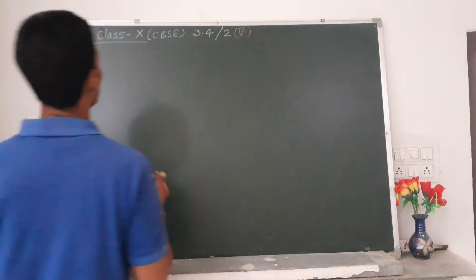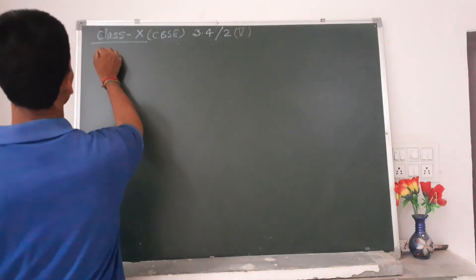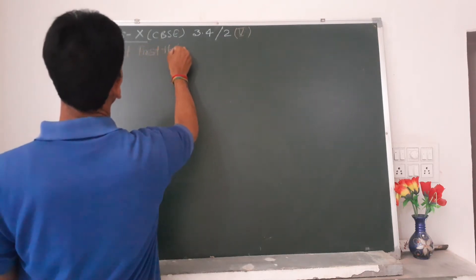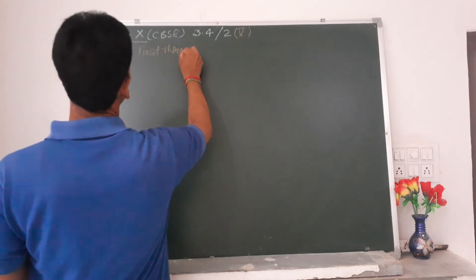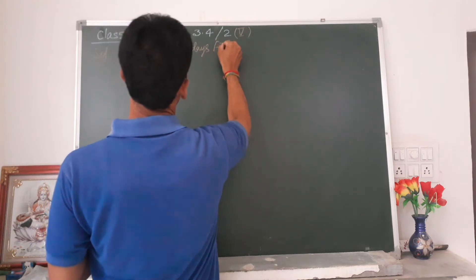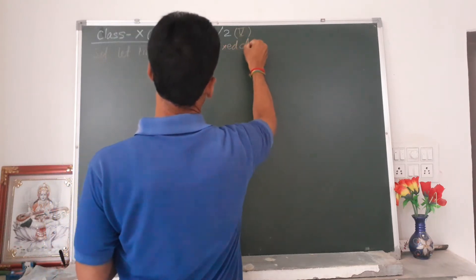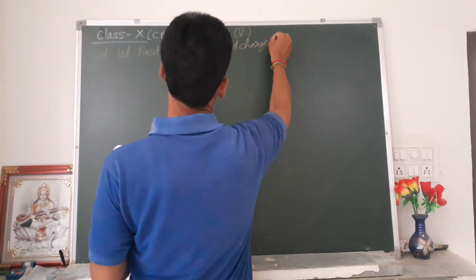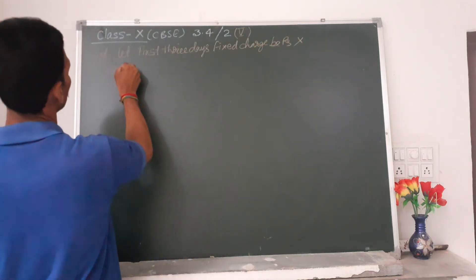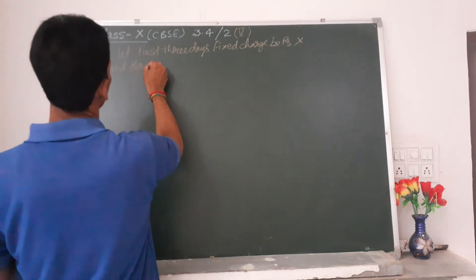But I don't know how much charge, so let first three days fixed charge be rupees X and per day charge be rupees Y.